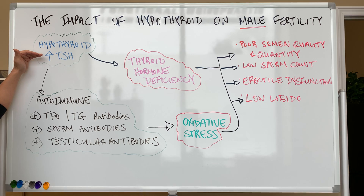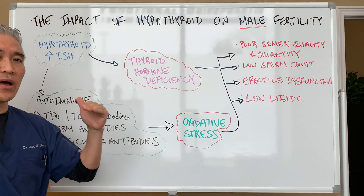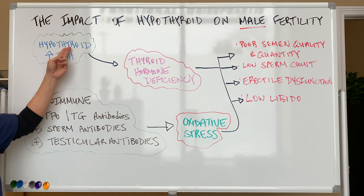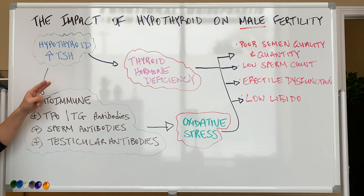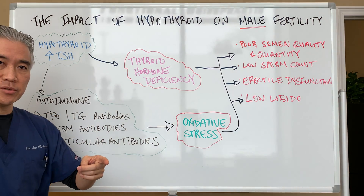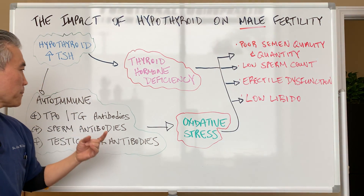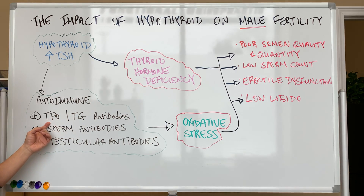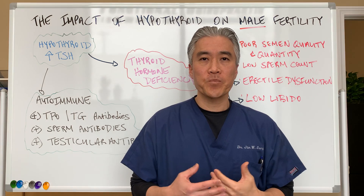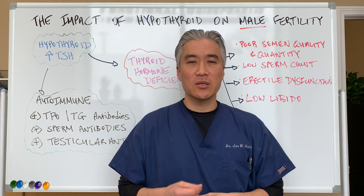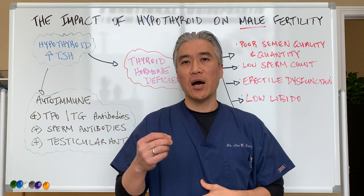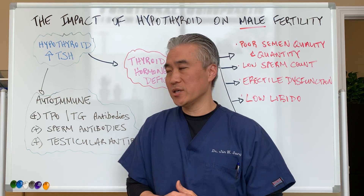Hypothyroid is an increase in TSH, or thyroid stimulating hormone. If you have high TSH, you can have hypothyroid. Basically what that means is you have a higher chance of having an autoimmune condition called Hashimoto's thyroiditis. When you have a positive TPO and TG antibody, you have Hashimoto's thyroiditis. This is important because the number one cause for hypothyroid here in the United States is Hashimoto's thyroiditis, which is an autoimmune condition.